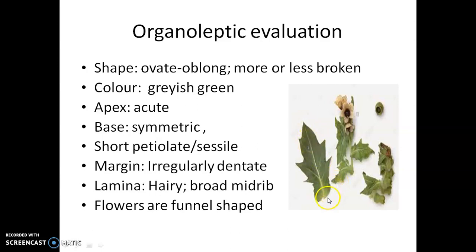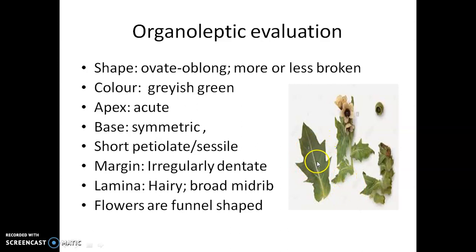The base is generally asymmetric and acute to slightly obtuse. The petiole is short, or in some cases the leaf is without a petiole. The margin is irregularly dentate. The lamina is highly hairy, the midrib is broad, and the flowers are funnel-shaped.